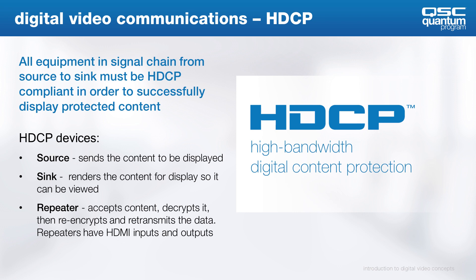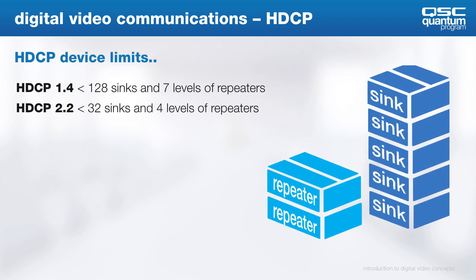Which is another reason why we care about HDCP versions — it's the device count limitation. As you can see, HDCP 1.4 allows more devices in the chain than 2.2: 7 levels of repeaters versus 4.